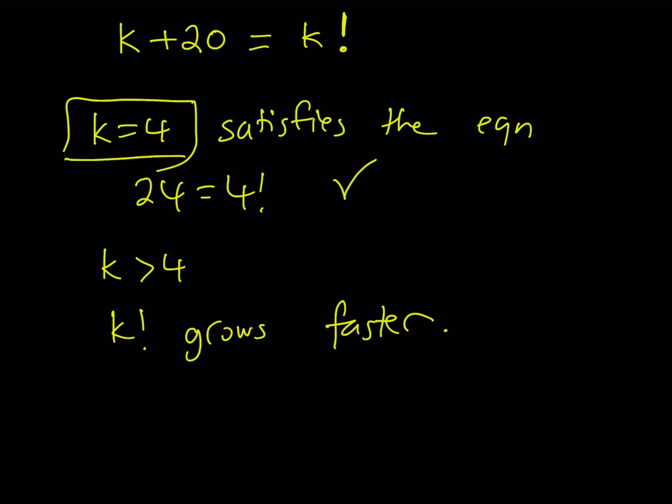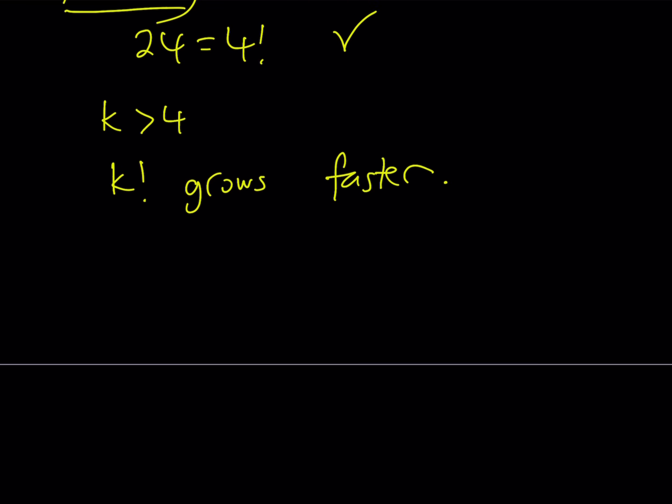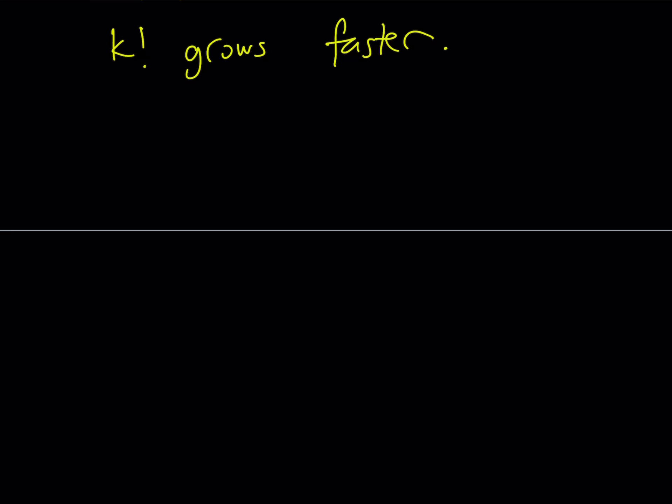But we're not looking for the k value, we're looking for the n value. n equals k plus 1, so let's rewrite our equation one more time. We have n squared plus 19n minus n factorial equals 0. Since n equals k plus 1 and k equals 4, we're going to be getting n equals 5.